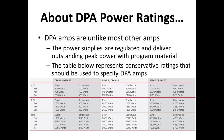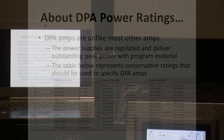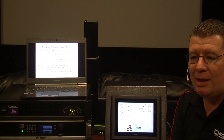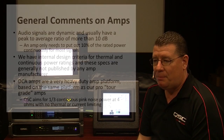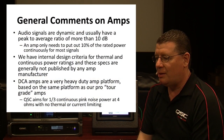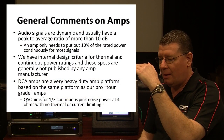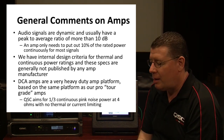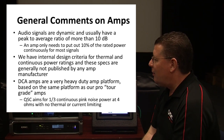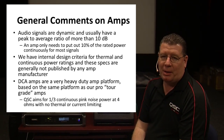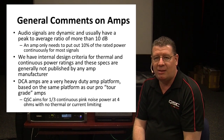Why do we have different numbers for sine waves versus program material? Sine waves in no way, shape, or form represent the realistic audio signals that will be applied to an amplifier in normal use. Audio signals have a dynamic range — there is a peak level that they hit, and then there is the average level that the amplifier is expected to provide.